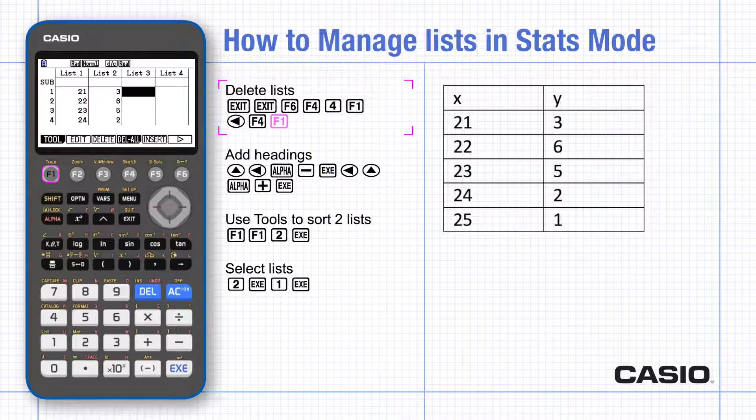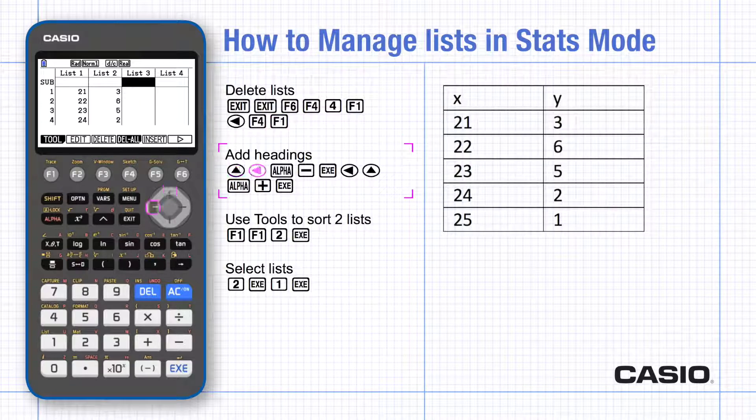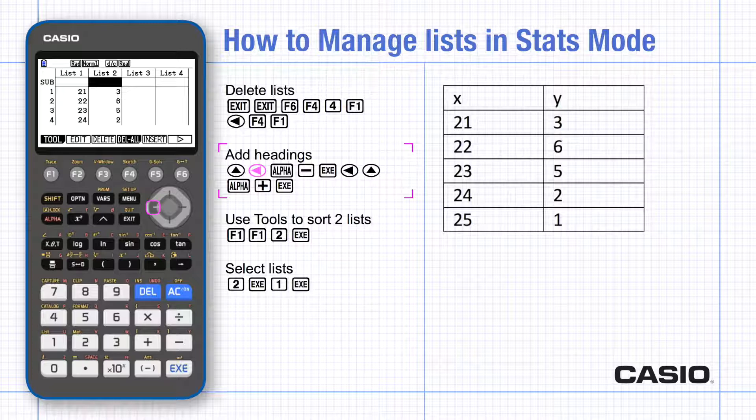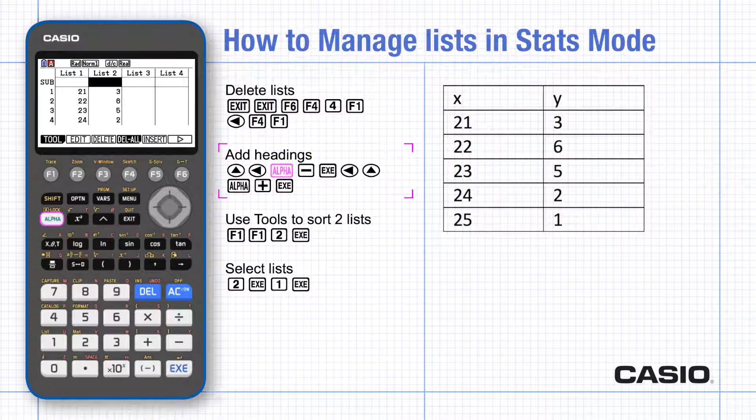Now you can add headings to these lists by scrolling across and typing in using the alpha key for Y and execute. Scroll again to use alpha X.